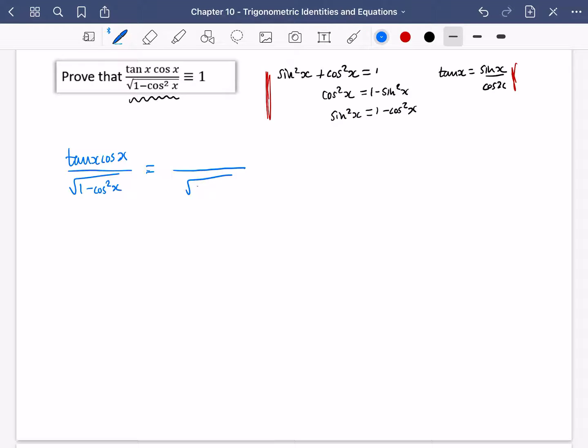So this is the square root of sin squared x. And for the numerator, I'm going to change tan x into sin x over cos x.